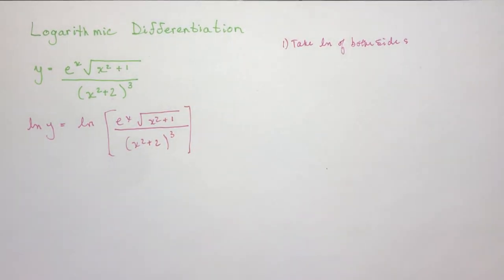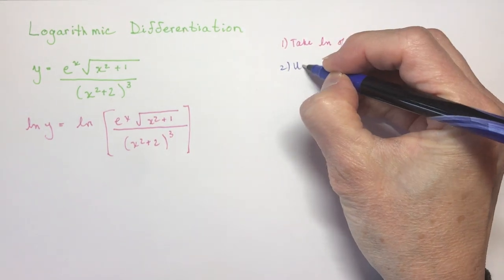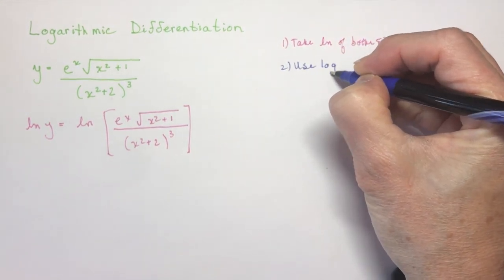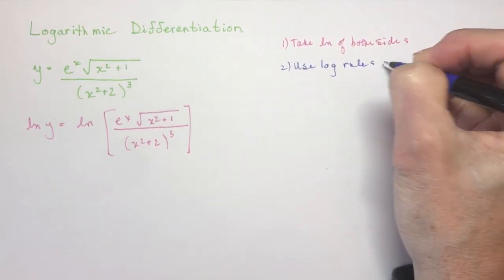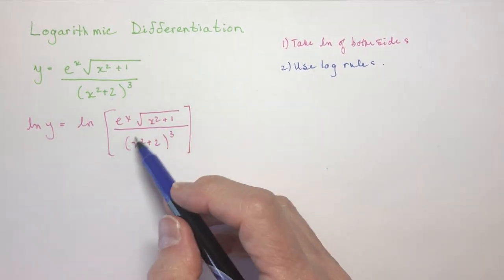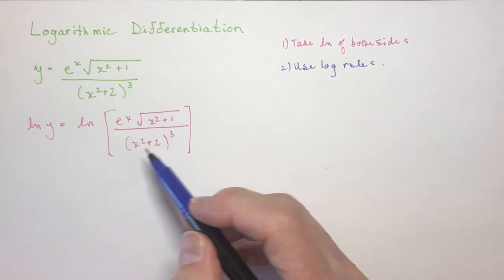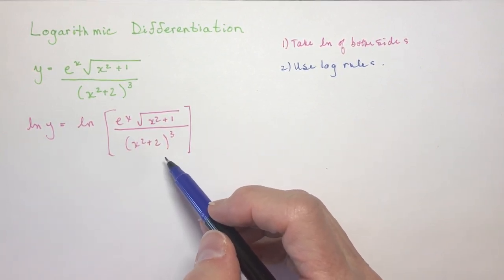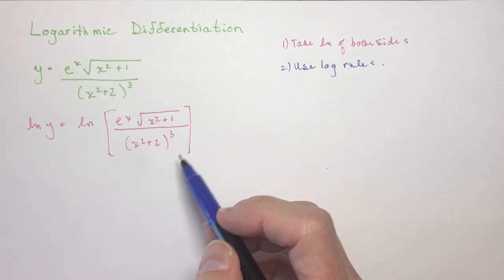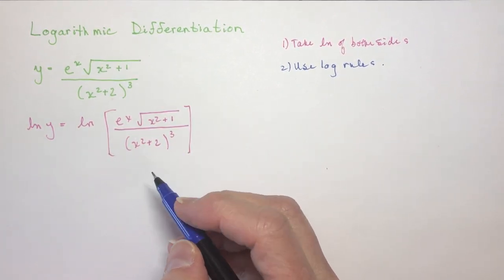Now the next step you're going to do is you're going to use your rules of logarithms. So we're going to use log rules. So do you remember your log rules? So things like if things are multiplied together becomes the ln of the sum of the two. If you're dividing, you subtract the ln of that. So we're going to split this all up. If you have exponents, remember they come to the front. So let's do all that now.